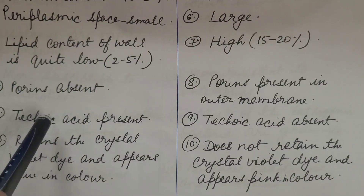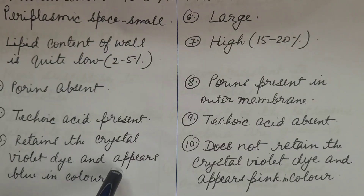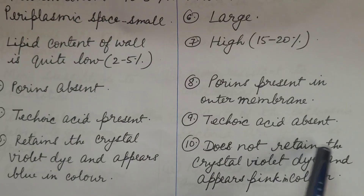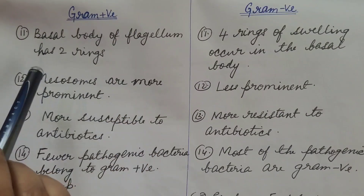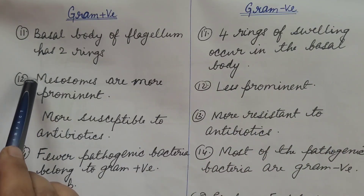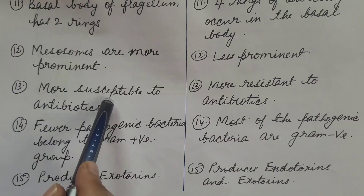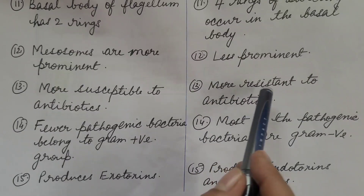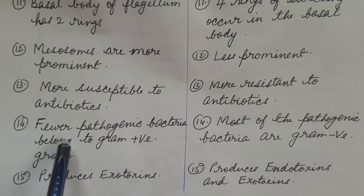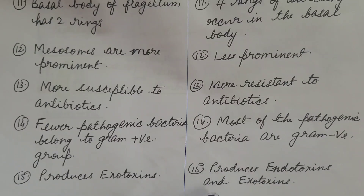Teichoic acid is present in gram positive bacteria but absent in gram negative bacteria. Gram positive bacteria retain crystal violet dye and appear blue; gram negative bacteria do not retain it and appear pink — the color of the secondary stain, safranin. In gram positive bacteria the basal body of the flagellum has two rings; in gram negative bacteria, four rings occur in the basal body. Mesosomes are more prominent in gram positive and less prominent in gram negative bacteria. Gram positive bacteria are more susceptible to antibiotics, while gram negative bacteria are more resistant. Fewer pathogenic bacteria belong to the gram positive group; most pathogenic bacteria are gram negative. Gram positive bacteria produce exotoxins; gram negative bacteria produce both endotoxins and exotoxins.